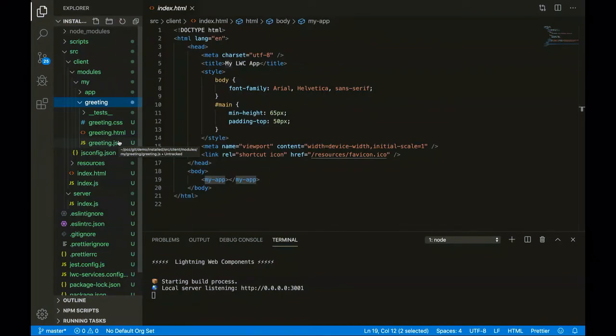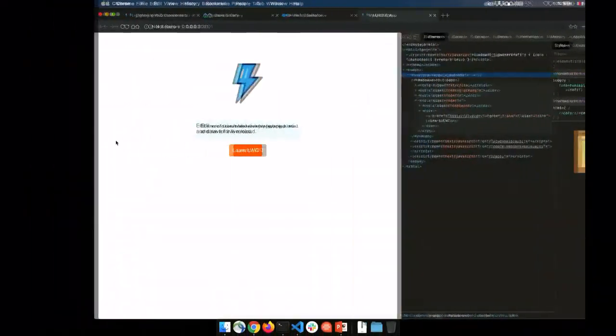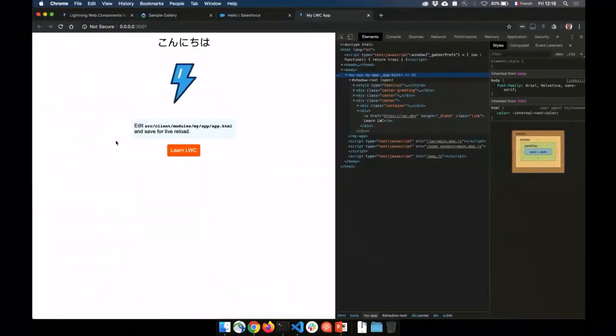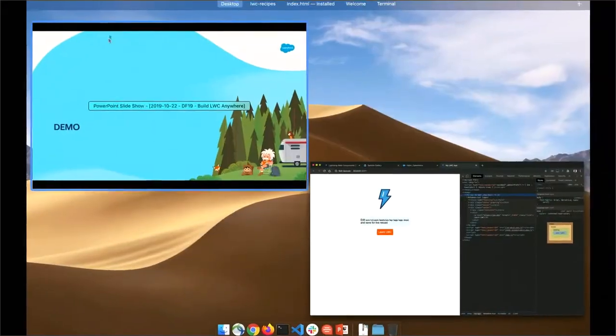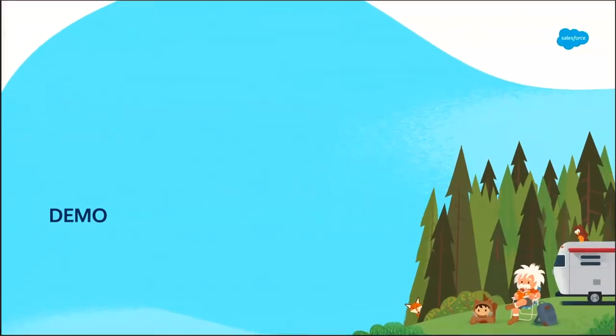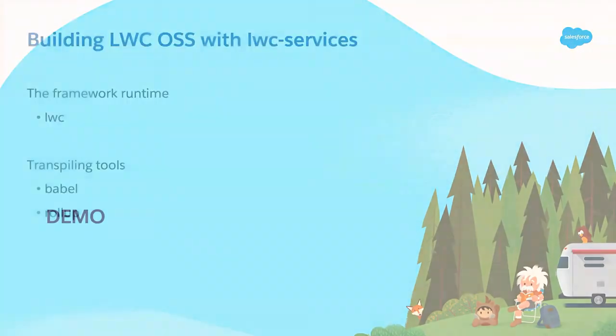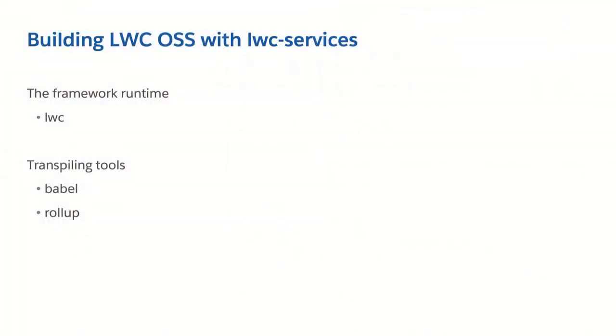I have two components available: the app component shown by MyApp, and a subcomponent called greeting being displayed under it. This project structure is pretty similar to what you have in an on-platform DX project — you have the same kind of files there, except you don't have the metadata file. Let me go back to the slides for a minute and talk a bit more about the tooling.